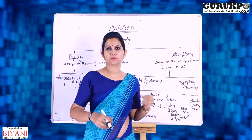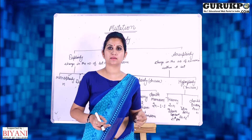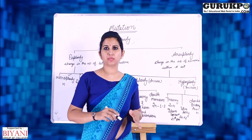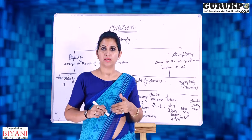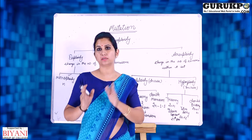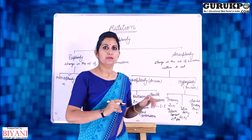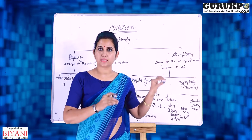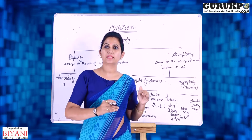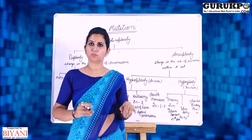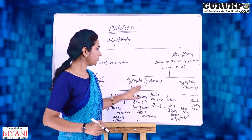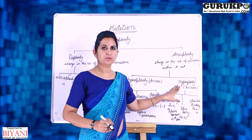Now moving on to aneuploidy. Aneuploidy involves an increase or decrease in the number of chromosomes within a set. In human beings, we have 46 chromosomes in a diploid condition with 23 chromosomes in each set. The number in each set either decreases or increases. Based on this, aneuploidy is divided into two types: hypoploid, where chromosome number decreases, and hyperploidy, where chromosome number increases.